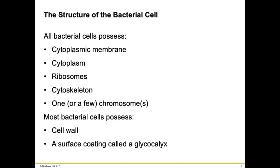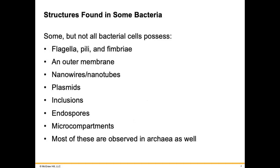All bacterial cells possess a cytoplasmic membrane, a cytoplasm, ribosomes, a cytoskeleton, and one or a few chromosomes. Most bacterial cells also possess a cell wall and a surface coating called a glycocalyx, which we will talk more about in a bit.